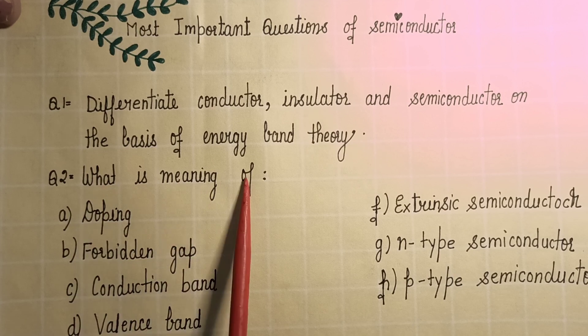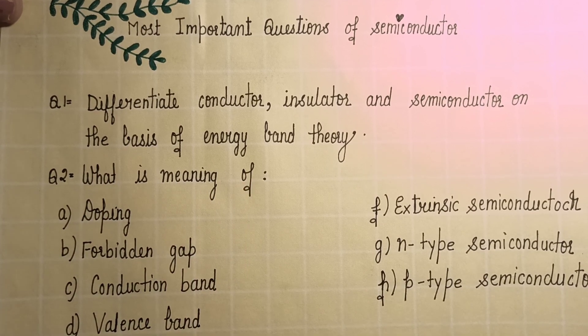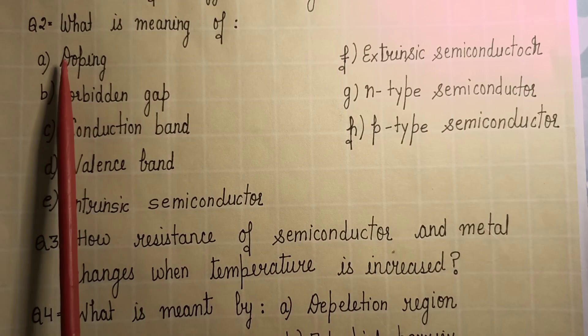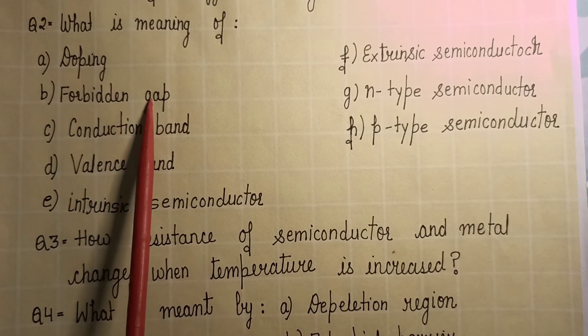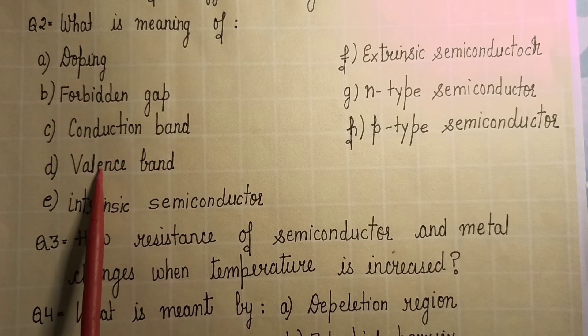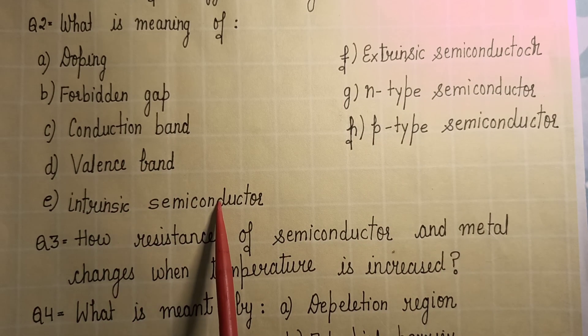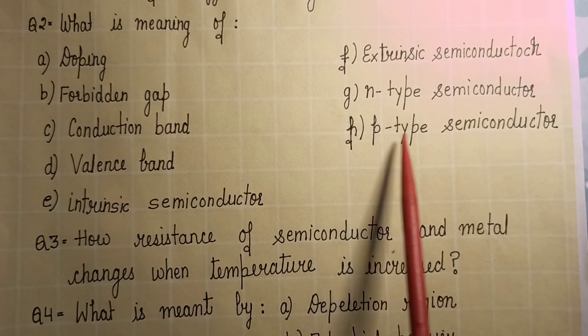Question number two is: what is meaning of the following terms? Take note of these topics and prepare them properly. The first term is doping, then forbidden gap, then conduction band, valence band, extrinsic semiconductor, intrinsic semiconductor, n-type semiconductor, and p-type semiconductor.